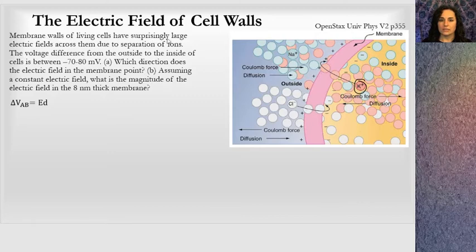The membrane walls of living cells have a surprisingly large electric field across them due to the separation of ions, and you can see that there's ions in here and there's ions in here. The voltage difference from the outside to the inside of the cells is negative 70 to 80 millivolts and it depends on the type of cell and what type of body it's in. That's the typical one, 70 to 80 millivolts, and that's a negative value. If you work with nerve conduction, the resting potential for a nerve cell is somewhere in here.